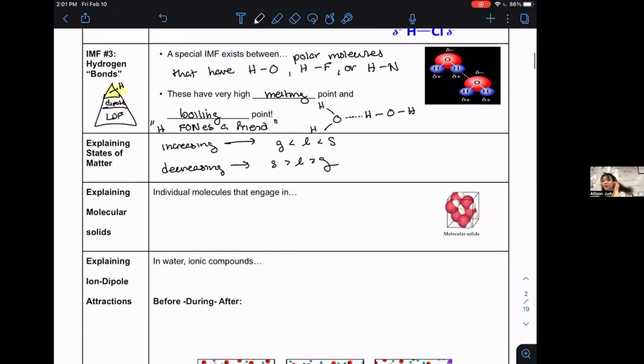How do we explain molecular solids? This was the type of solid that molecules can form. This is when individual molecules engage in IMFs so strong they make a solid.